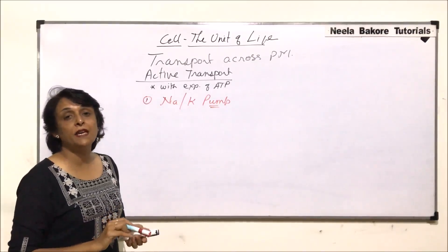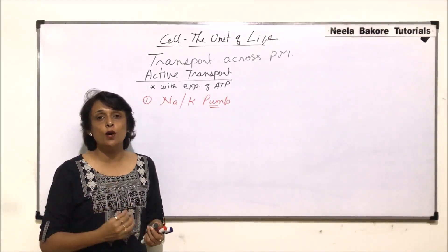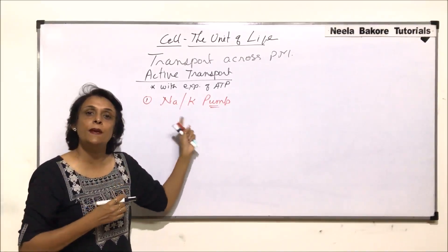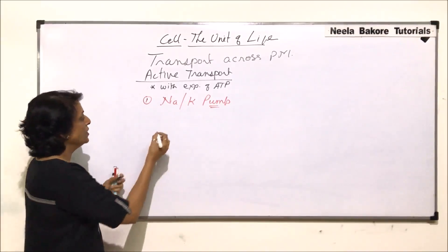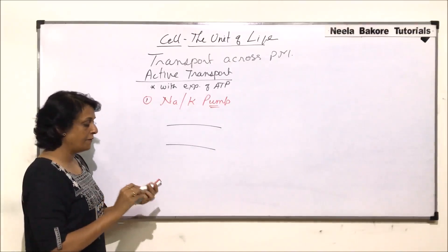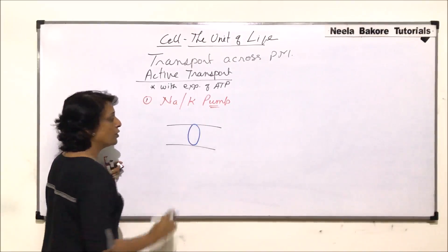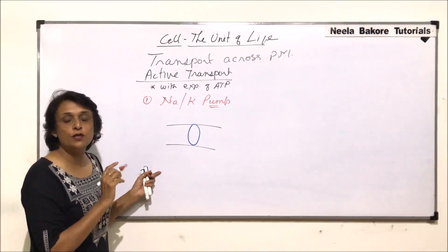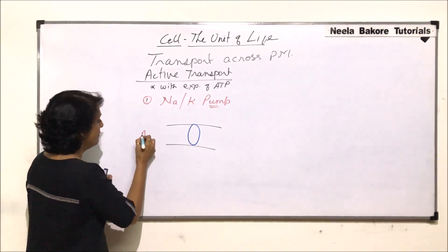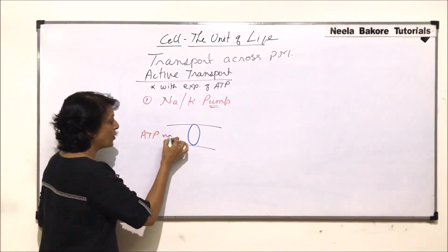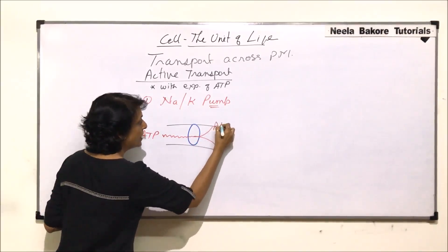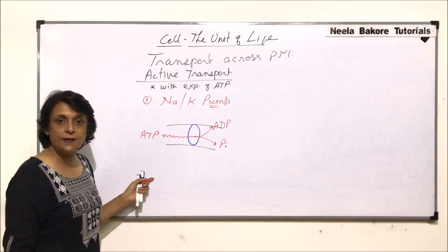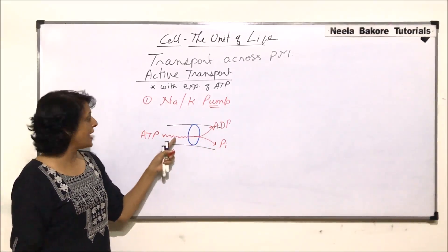Whenever we use the word pump, we are talking about a protein which works with expenditure of ATP. This protein helps in transport of sodium and potassium. If this is the plasma membrane and we draw one intrinsic protein acting as the sodium-potassium pump, this pump uses the energy released from hydrolysis of ATP. One ATP molecule dissociates, giving ADP — adenosine diphosphate — and inorganic phosphate. When the phosphate bond breaks, energy is released.